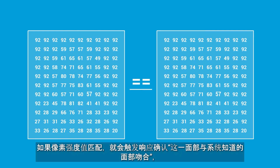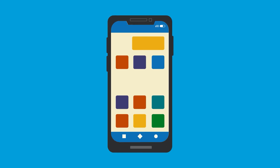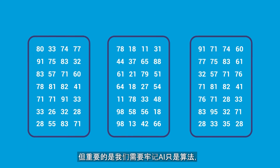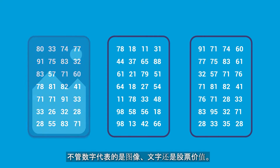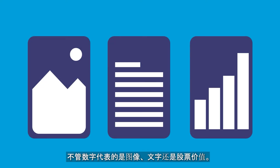If the values match up, it triggers a response confirming this face matches the one we know, and proceeds to unlock your phone. This is an extremely simplified example of a highly complex process. But it is important to remember that AI is an algorithm and it only deals with numbers, no matter if they represent images, words, or stock values.